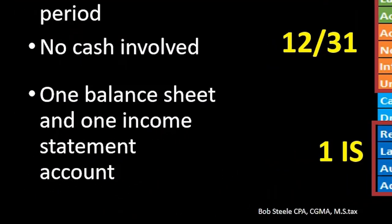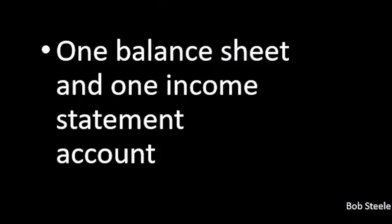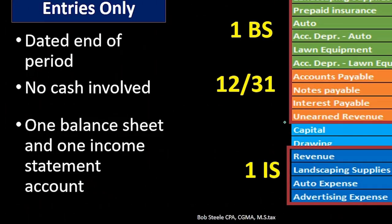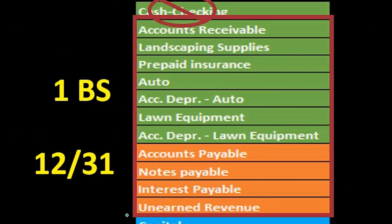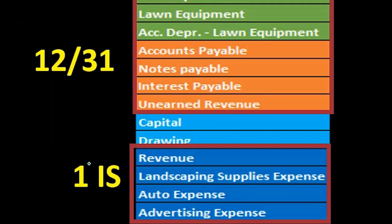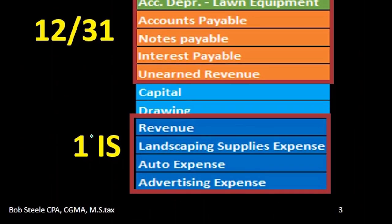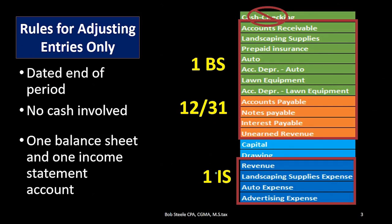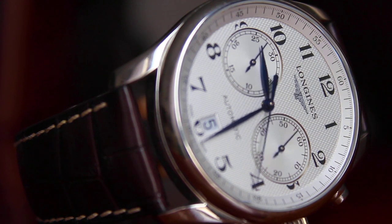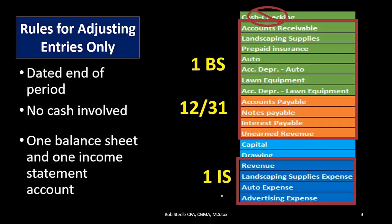We're going to have one balance sheet account and one income statement account. So in our trial balance, the balance sheet accounts — including capital, but typically everything above the capital account — we're going to pick one of those accounts related to the adjusting entry we are working on. And we're going to have one income statement account — the revenue or expense accounts below the capital account. Why? Because those are the timing accounts, and when we do the adjusting entries, we're dealing with timing. We'll talk more about the reasons for these rules in a future presentation.